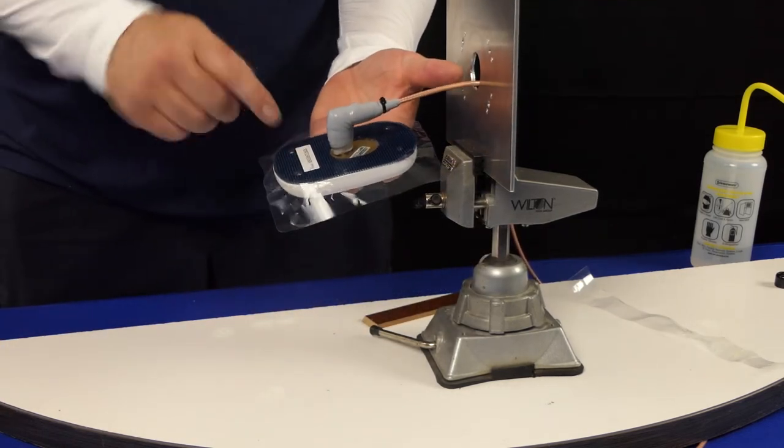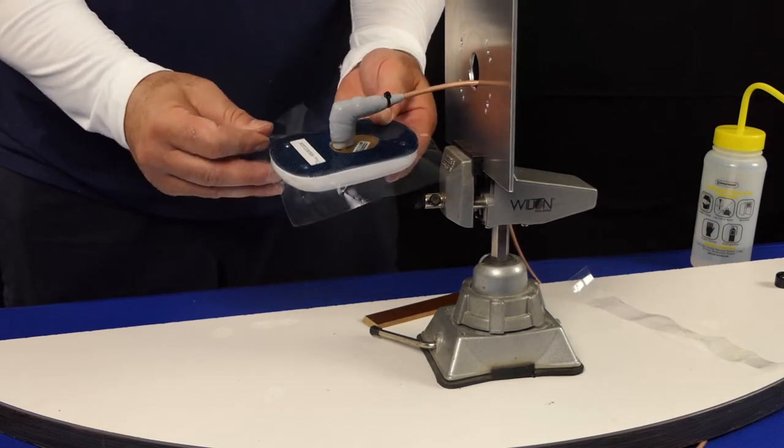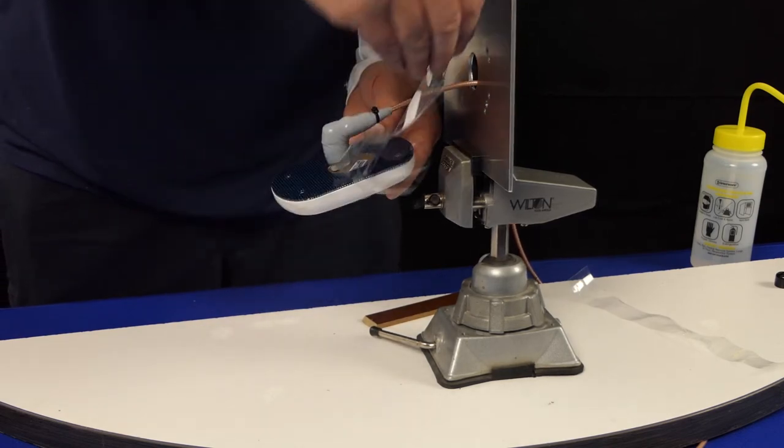Antenna installation. Remove the release film from the aircraft side of the HITAC conductive polyurethane gasket.